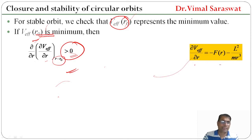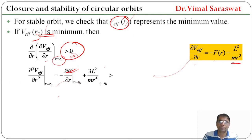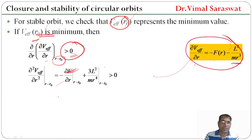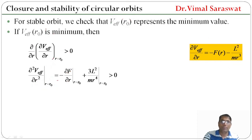Since ∂V_effective/∂r = −F(r) − l²/(mr³), differentiating again with respect to r gives: ∂²V_effective/∂r² at r = r₀ = −∂F/∂r|_{r₀} + 3l²/(mr⁴)|_{r₀} > 0. Because differentiating −l²/(mr³) gives +3l²/(mr⁴).